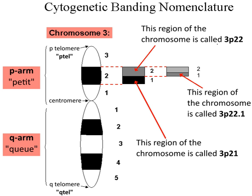In the notation 3p22.1: 3 equals chromosome 3, p equals the p-arm, 22 equals region 2, band 2 (read as 2,2 — not 22), and 1 equals sub-band 1. Thus the entire locus of the example above would be read as 3p22.1.